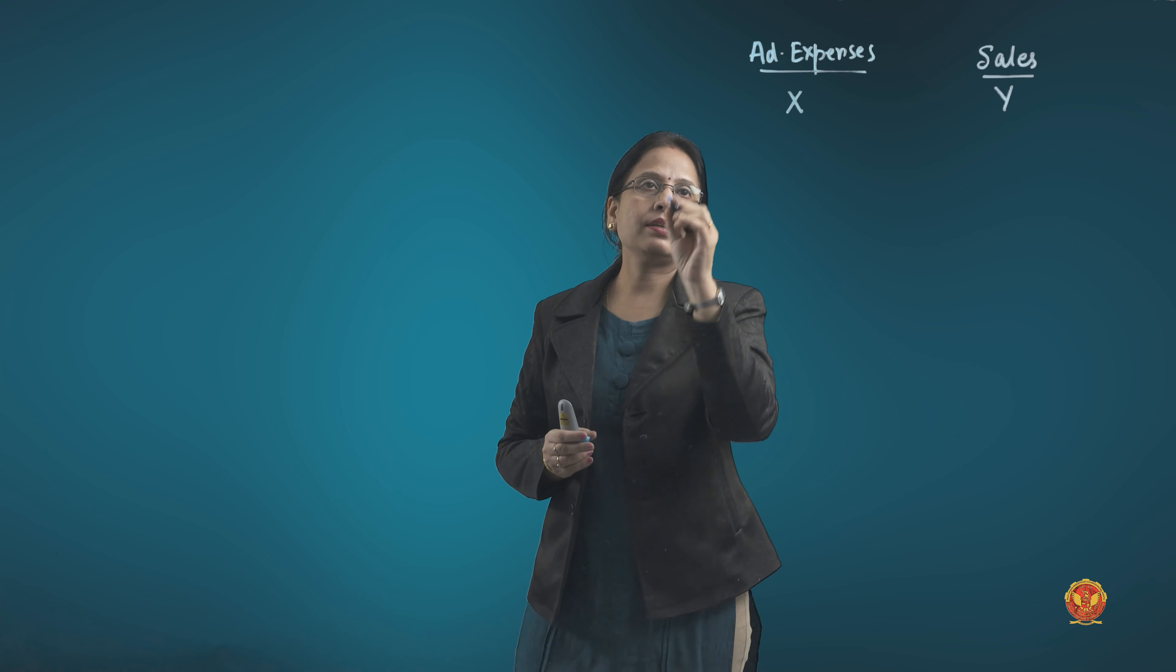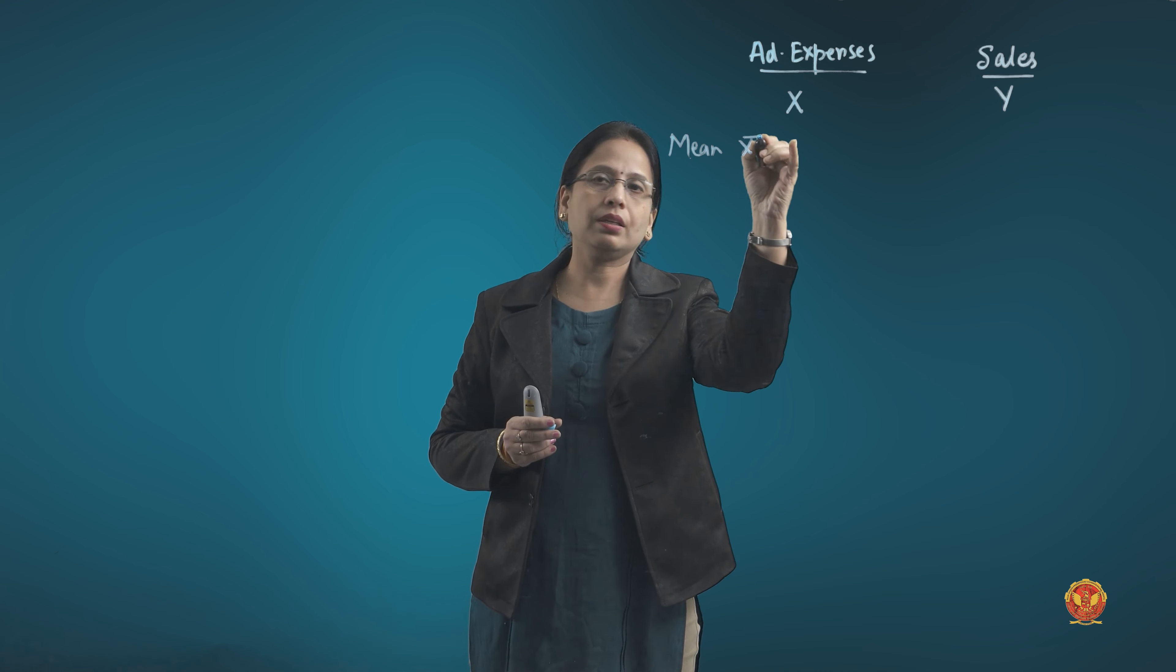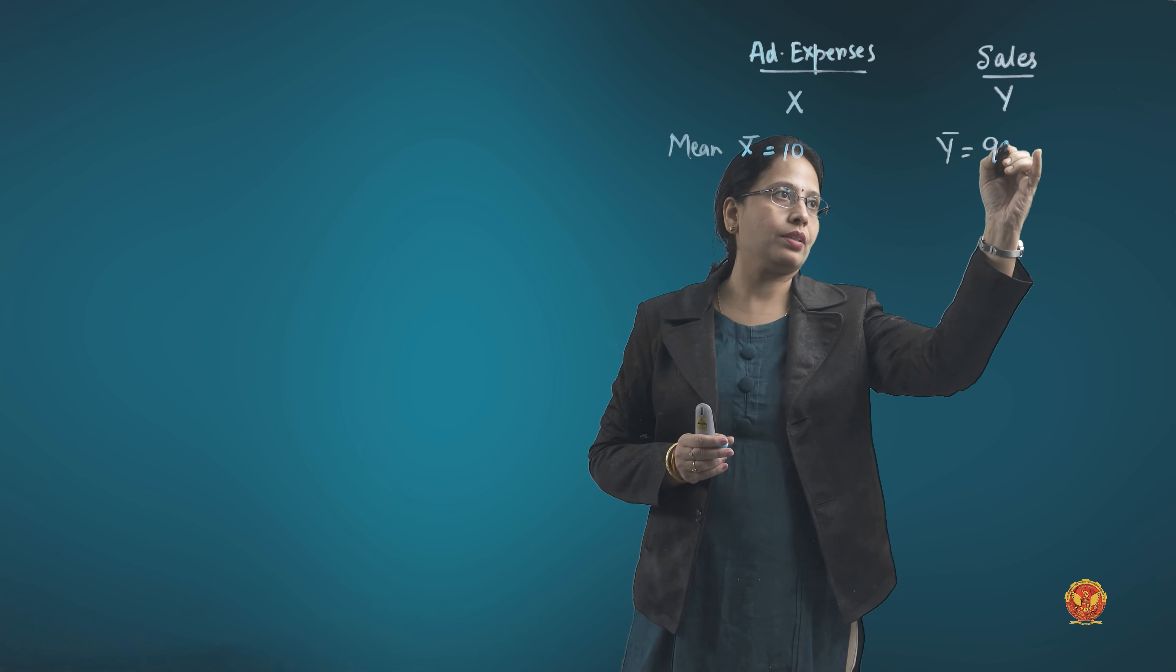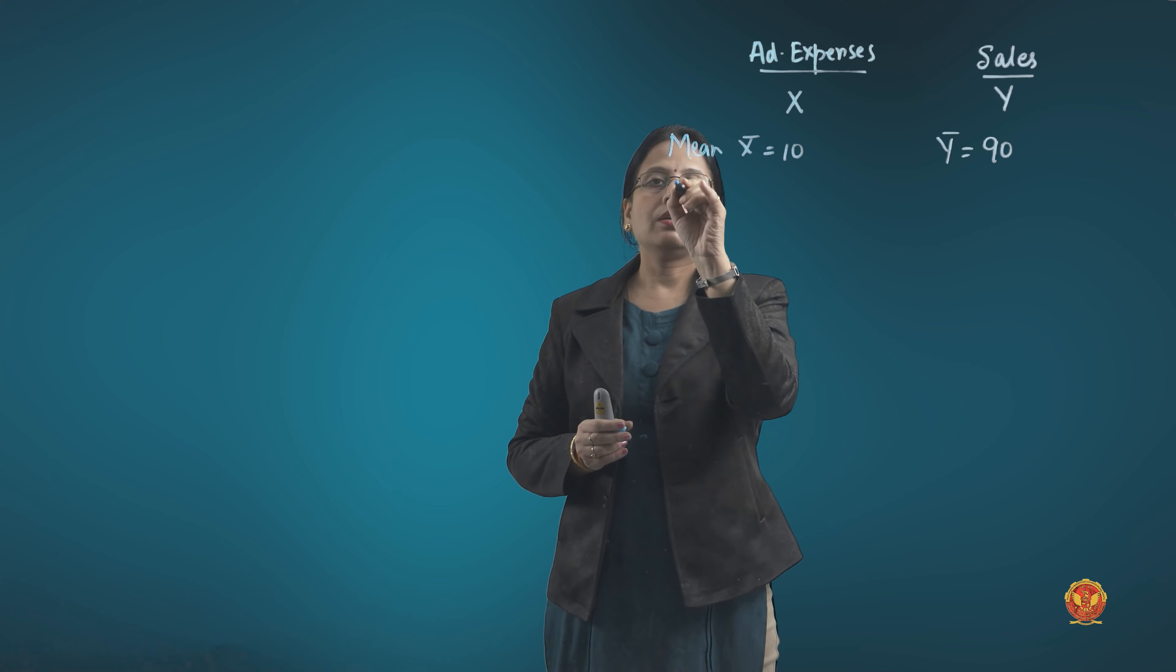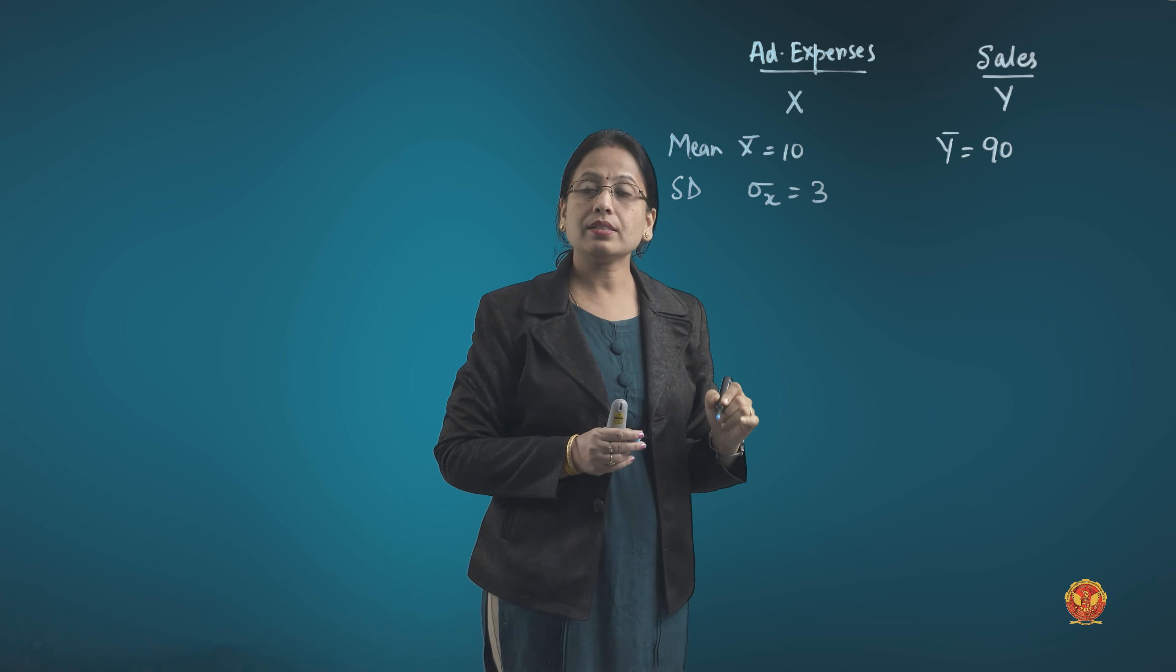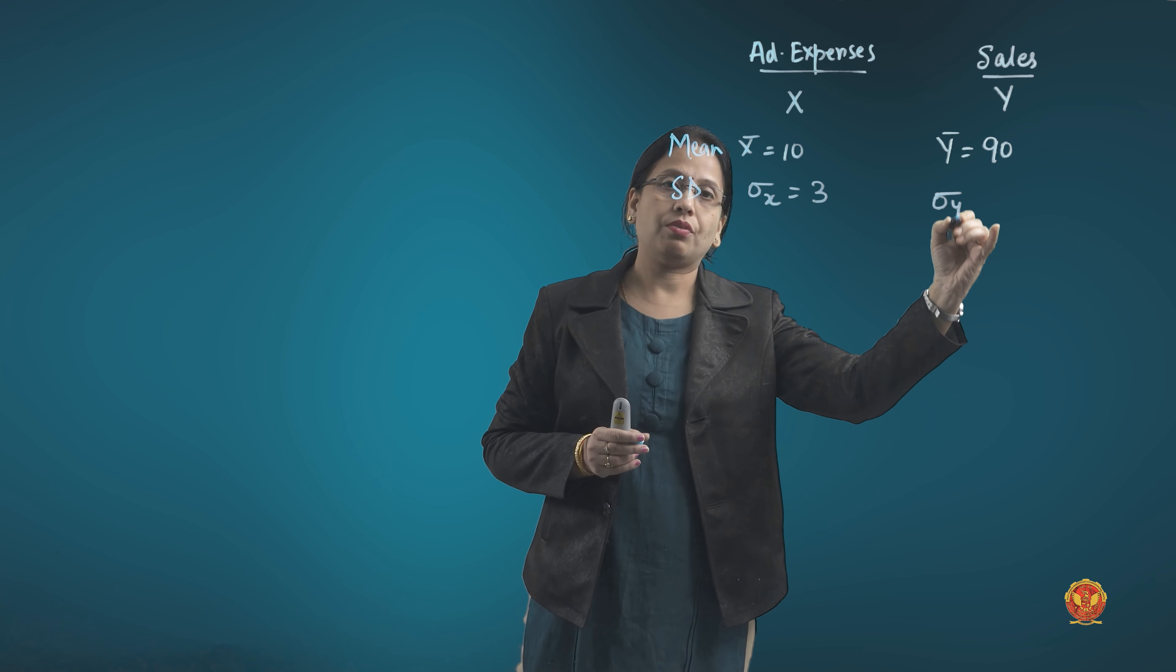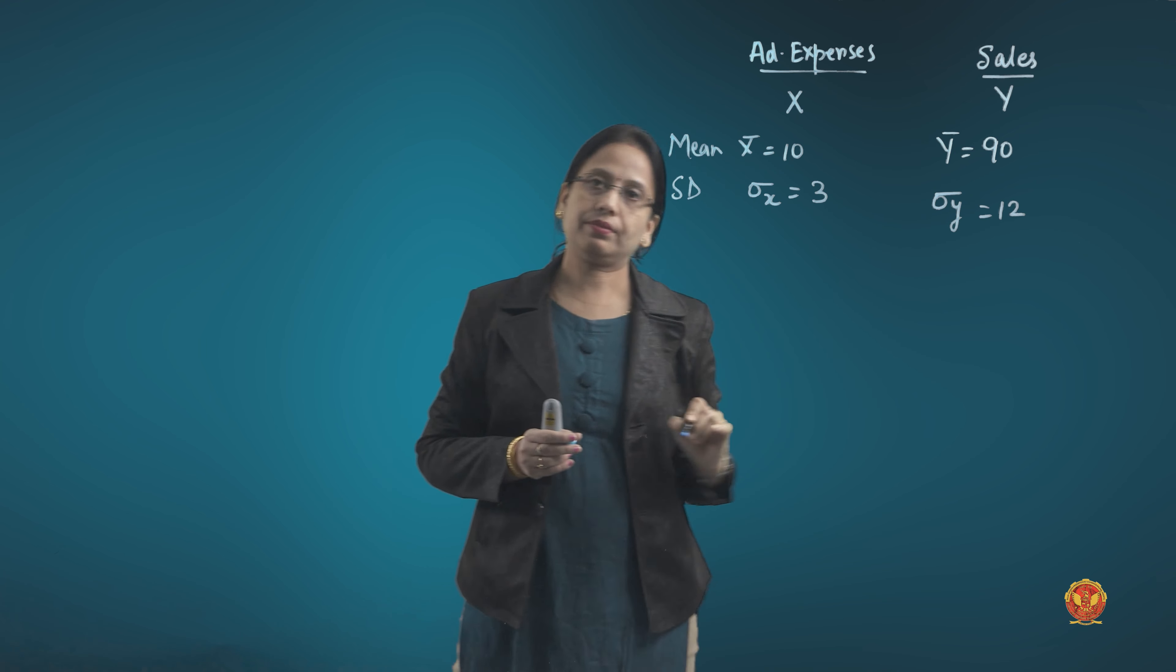What information is given? Mean x is already given as 10, and the mean of the y series is given as 90. Besides that, standard deviation of x is given as 3, and standard deviation of y is given as 12.